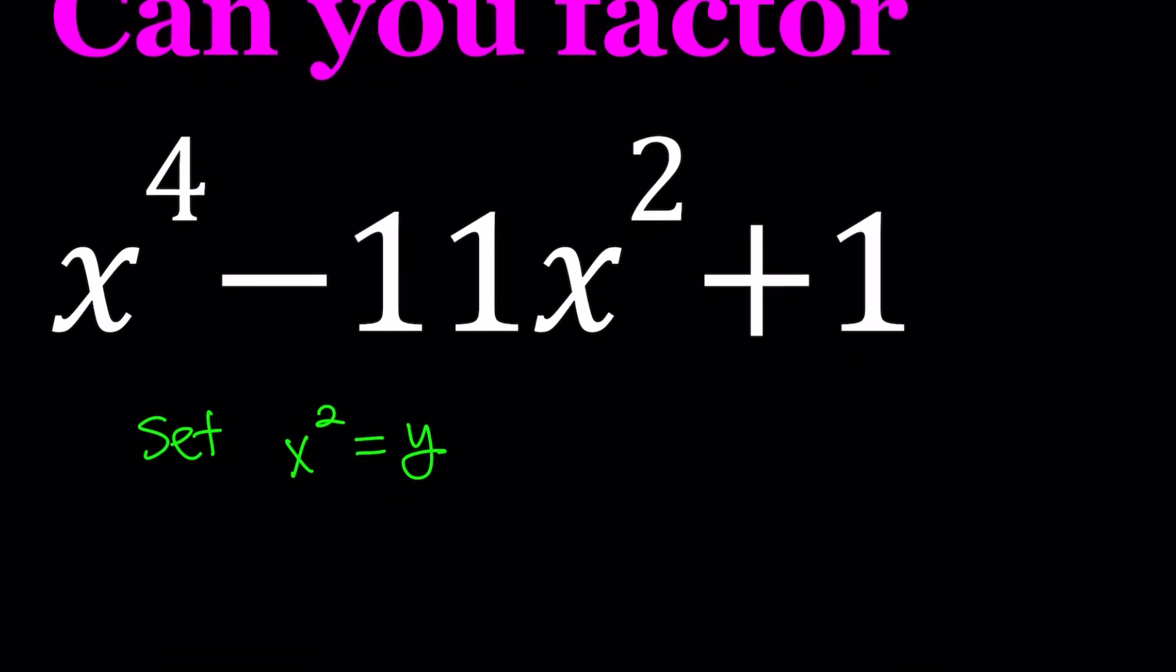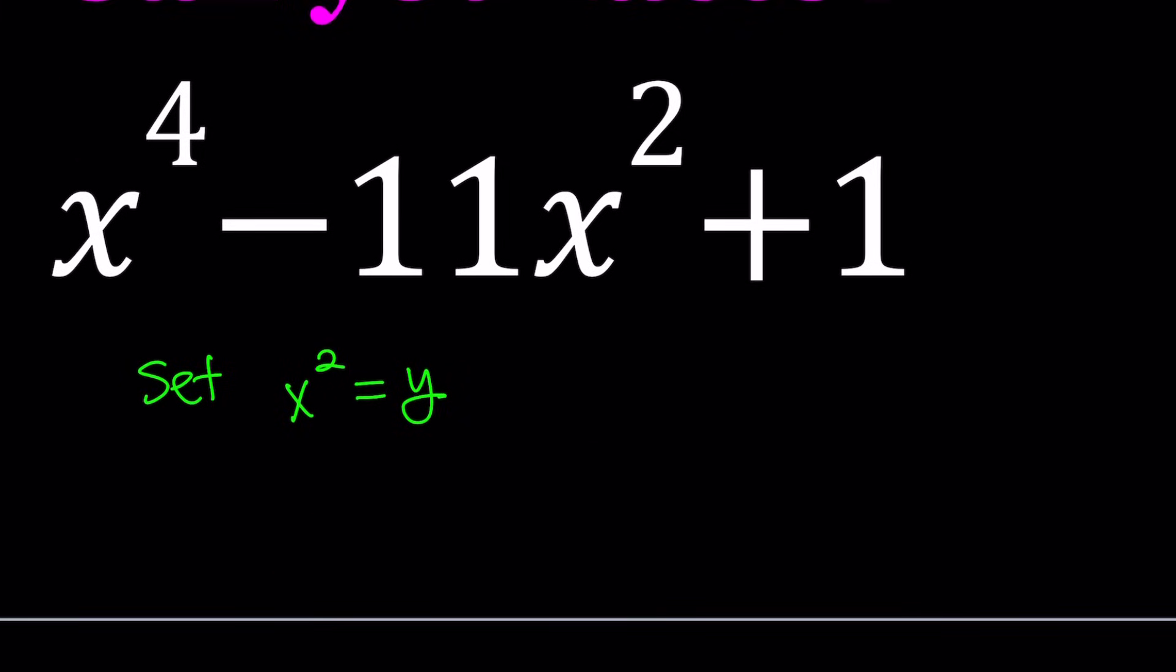Okay. Let's see what follows. When I replace x squared with y, x to the fourth is just going to be y squared, because if you square both sides, that's what you get. So we obtain y squared minus 11y plus 1.